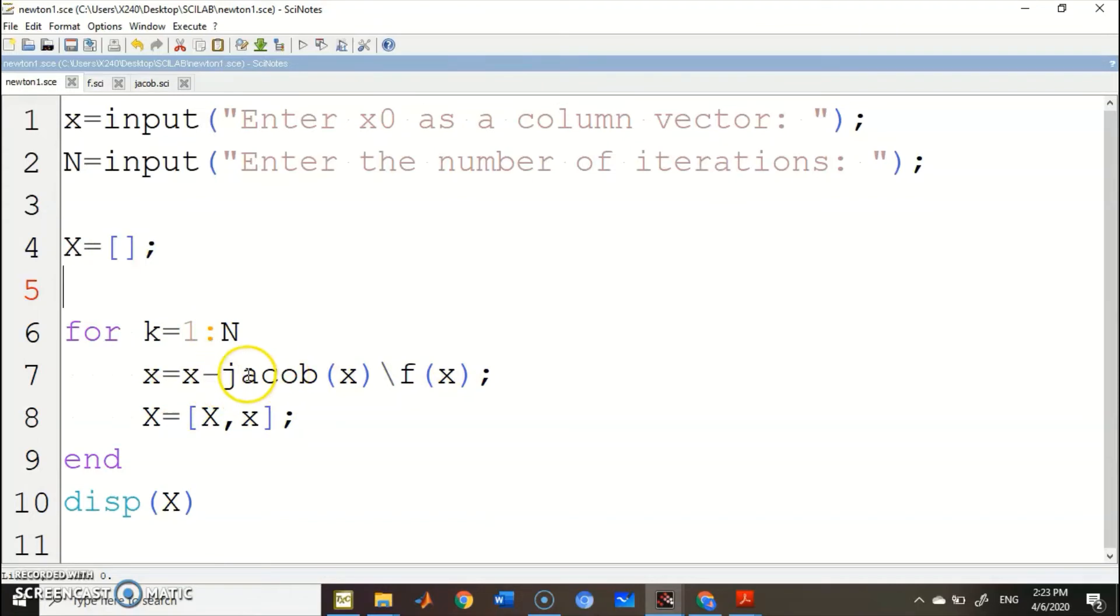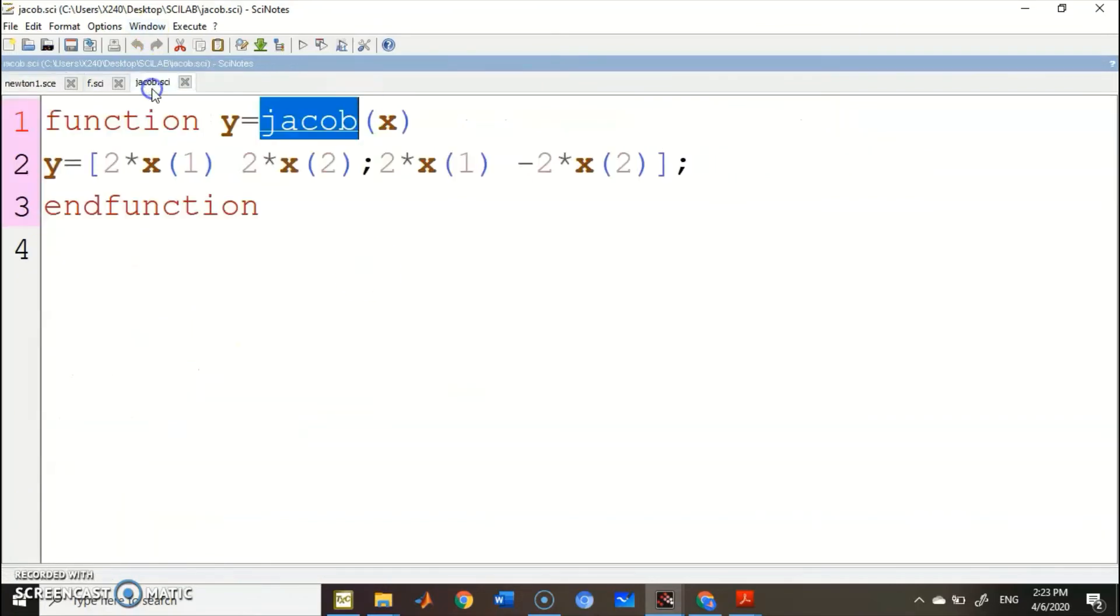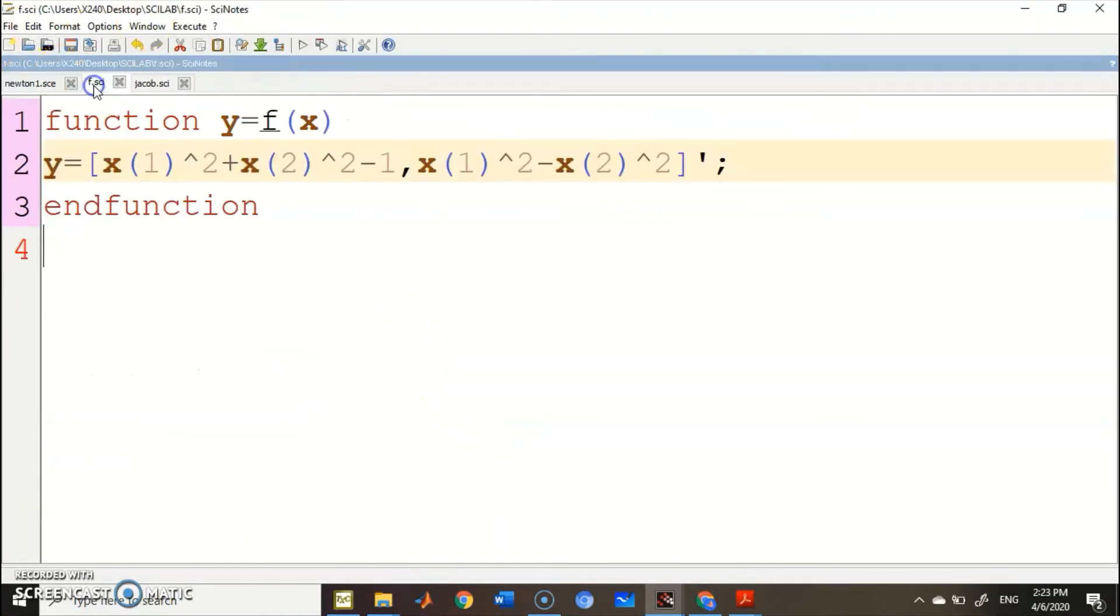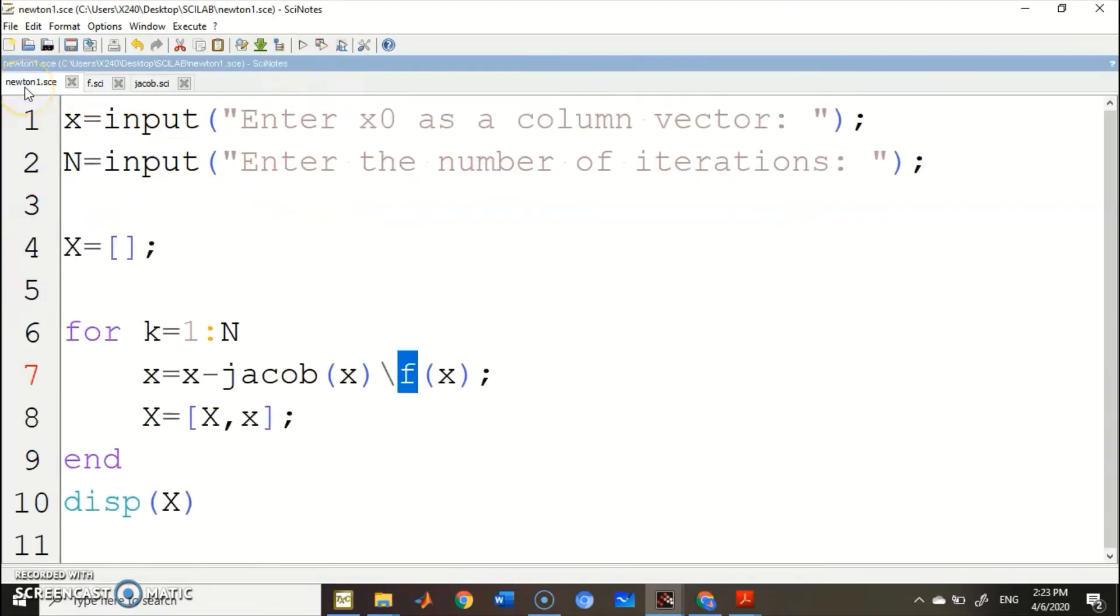X minus Jacob here refers to the Jacob function file. Make sure the names are the same. And F here refers to the F function file. The names must be correct. Then press Execute.